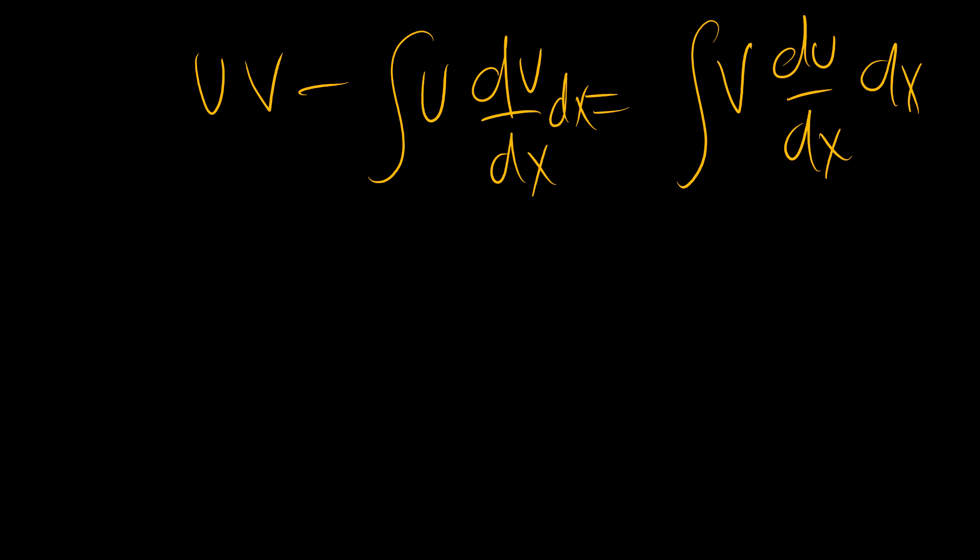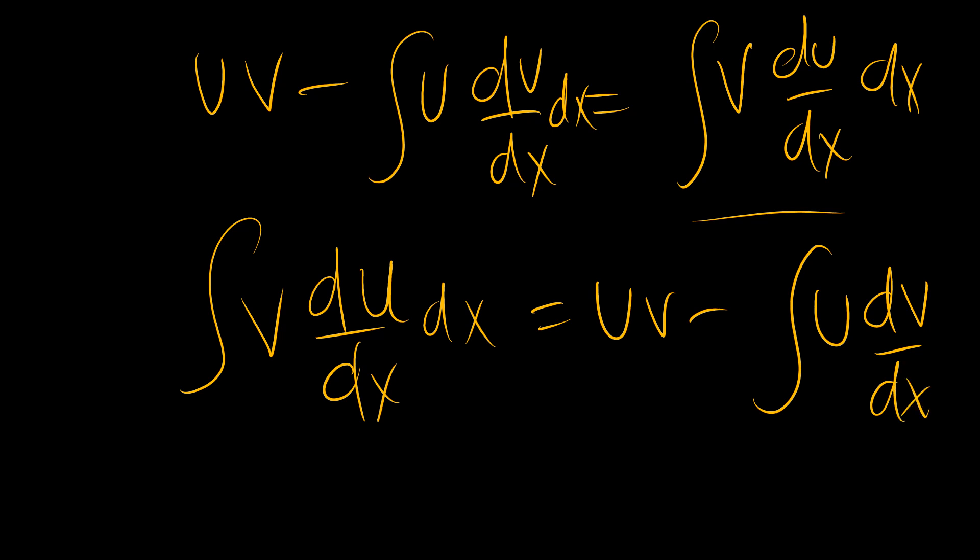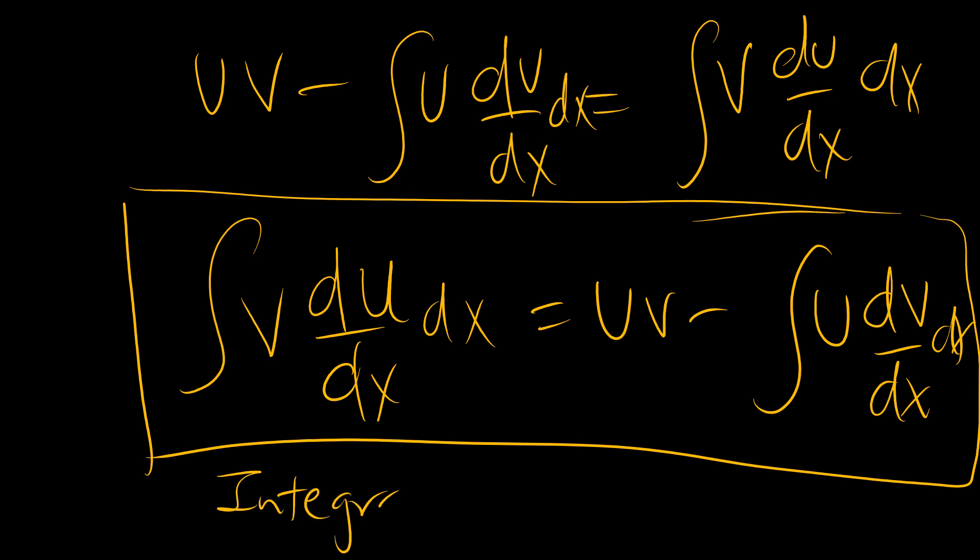So essentially, swapping sides, the integral of v du/dx equals uv minus the integral of u dv/dx. This is the hallmark of what we call integration by parts.